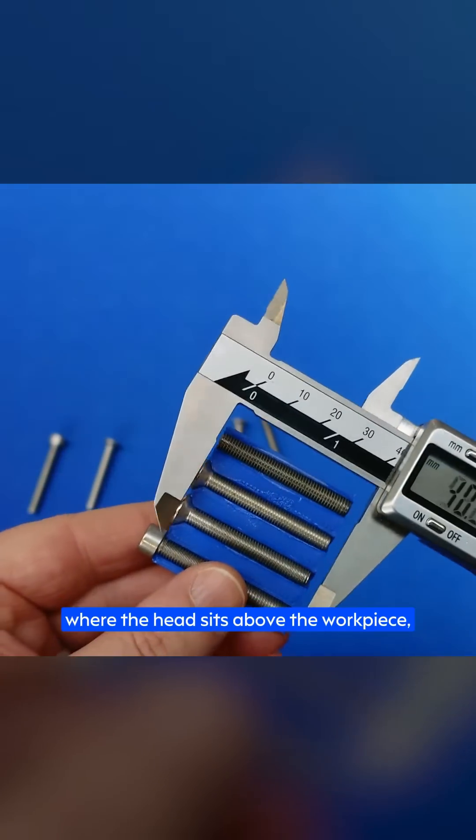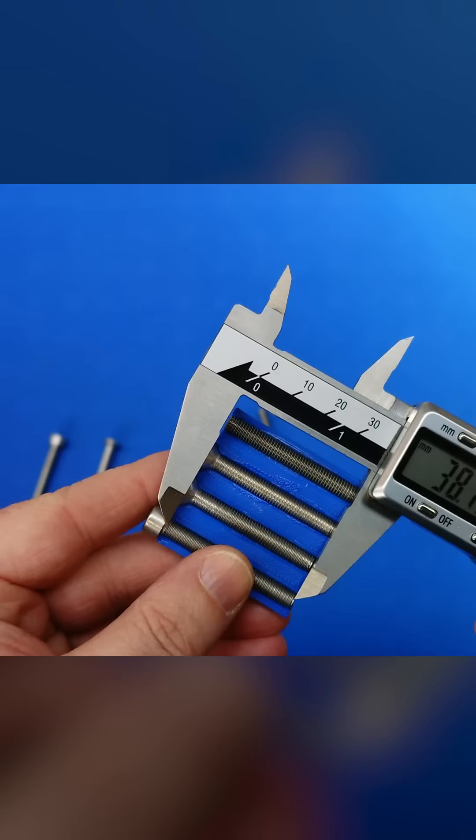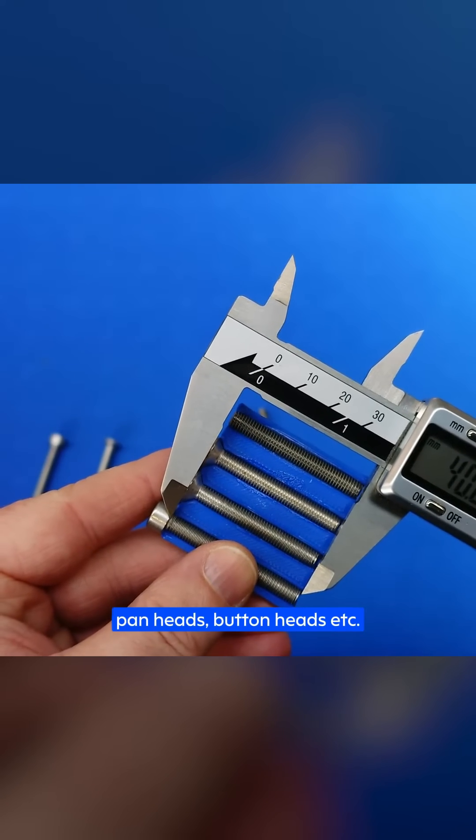Let's start with the cap head. On this type of screw, where the head sits above the workpiece, we measure from below the head to the very end of the threads. This is the same for hex head bolts, pan heads, button heads, etc.